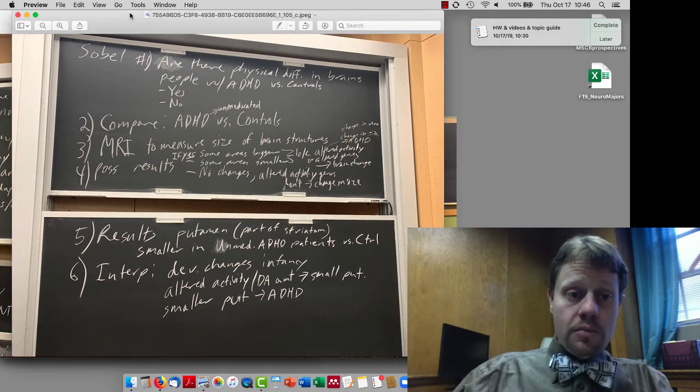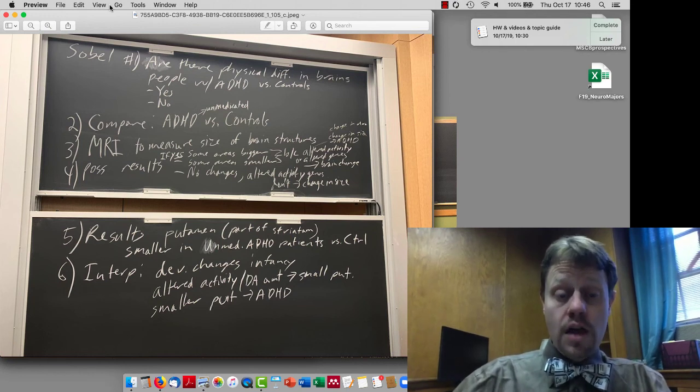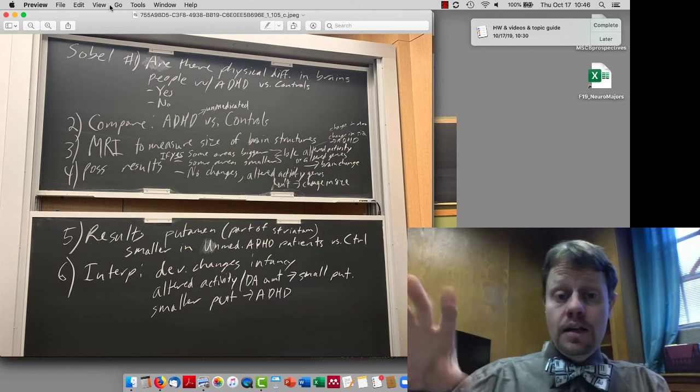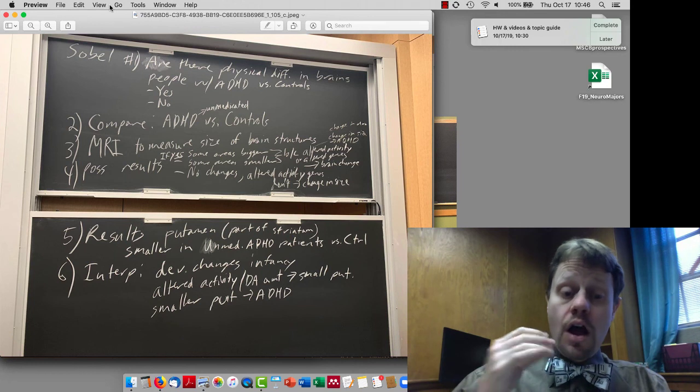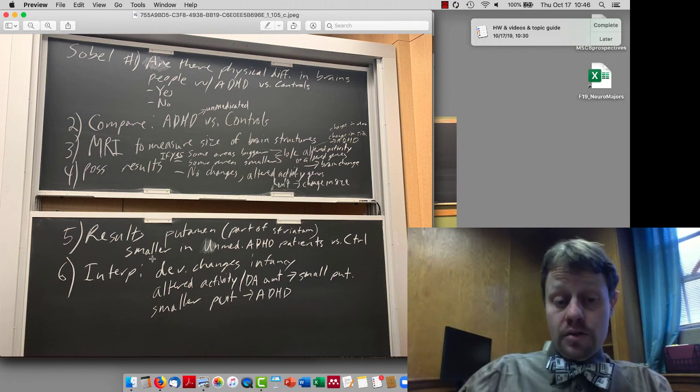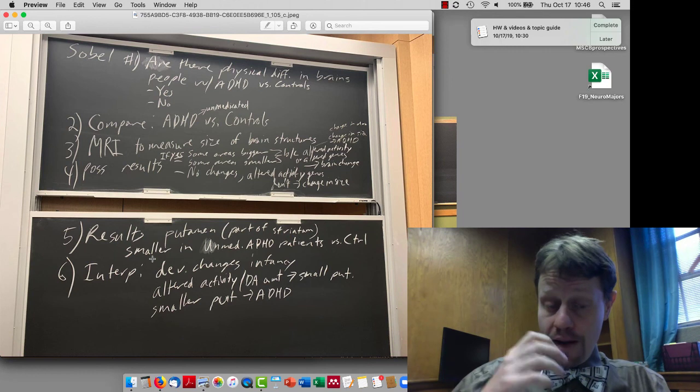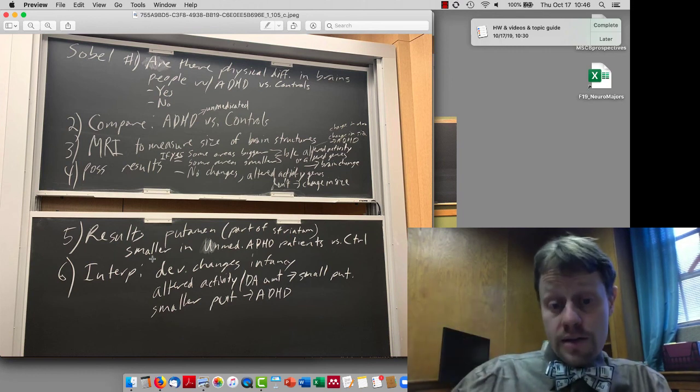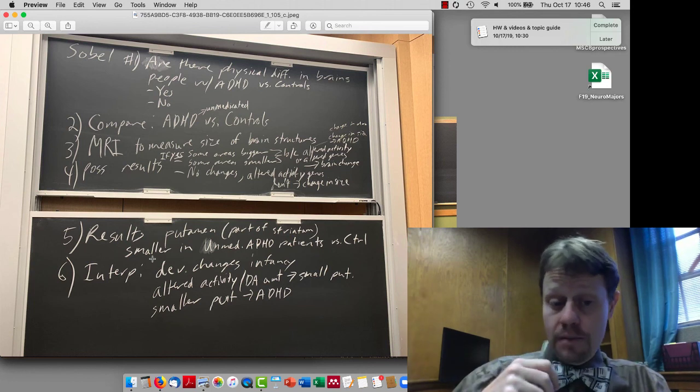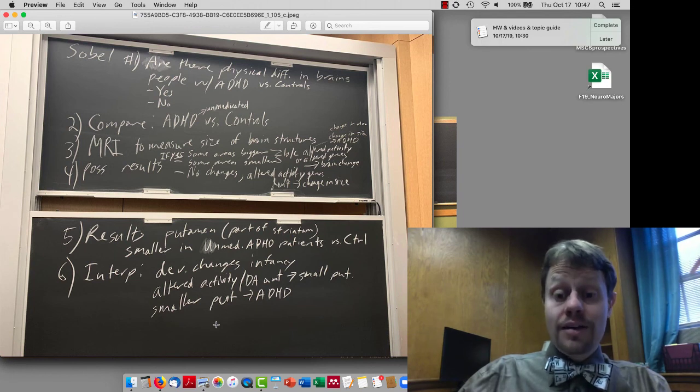The last thing we talked about today is the Sobel study. In that study, they asked two questions. The first is just looking for physical anatomical differences in brains of people with ADHD versus controls. So the first comparison they did is comparing unmedicated ADHD brains versus controls, looking at the sizes of various brain structures. What they found is that the putamen, which is part of the striatum, is smaller in brains with unmedicated ADHD. There are a number of possible interpretations of this. One is that maybe there's some developmental change early in the brain that causes the putamen to get small, and that might cause ADHD or be somehow correlated with ADHD. Or maybe the fact that going through their teenage years with a different amount of dopamine than controls in their brain might lead to the putamen getting smaller.